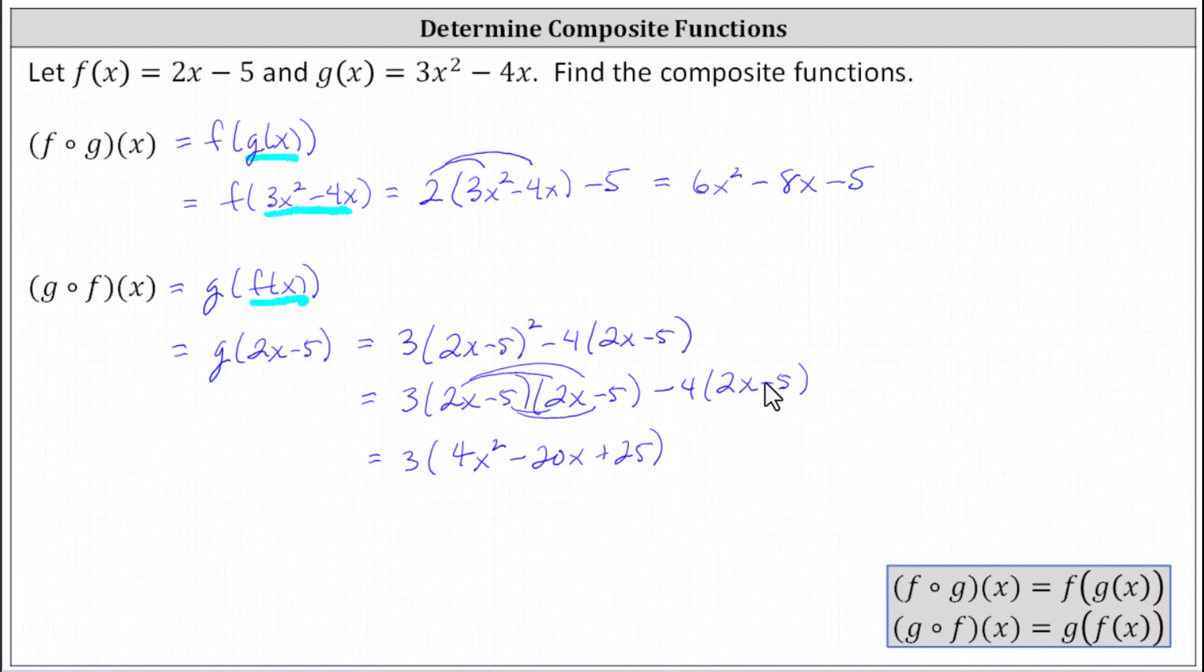Distributing 4, we have minus 4 times 2x, which is minus 8x, and minus 4 times negative 5 simplifies to plus 20. Remember, negative times a negative is positive.